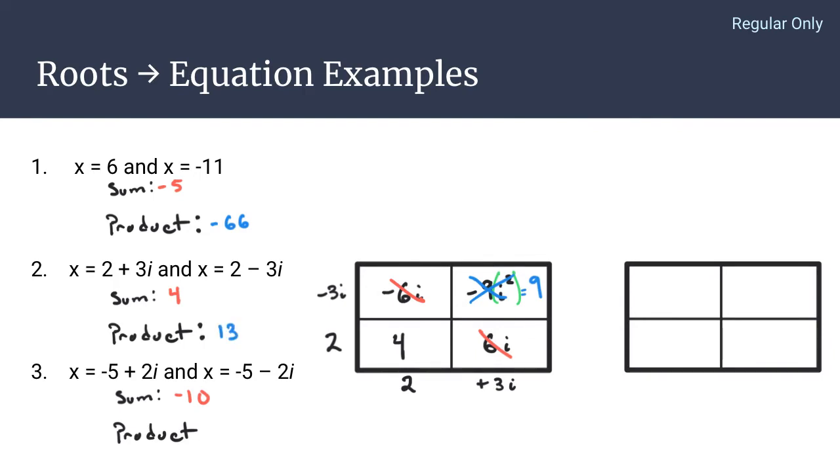For our final example, we would put negative 5 plus 2i across the bottom, negative 5 minus 2i across the left, and then we start to multiply. So you have positive 25 on the bottom left, negative 10i, positive 10i, and then on the top right, you're going to have negative 4i squared.